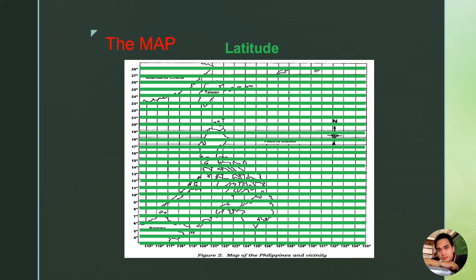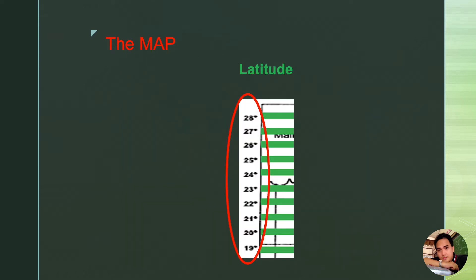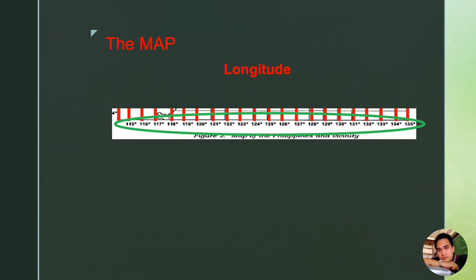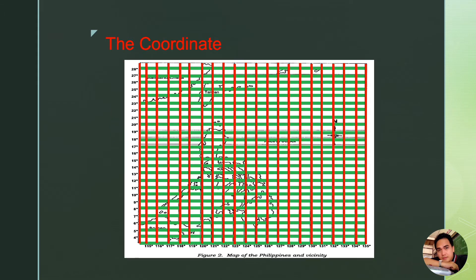The latitude is an imaginary line shown here in green horizontal lines. Note that each line is a measure of degree, shown here as numbers. These numbers are found on the left or right side of maps. Next, we have the longitudes, shown here as red vertical lines. Lastly, we have the coordinates. A coordinate is usually a pair of numbers which denotes a single or specific position on a plane or map.